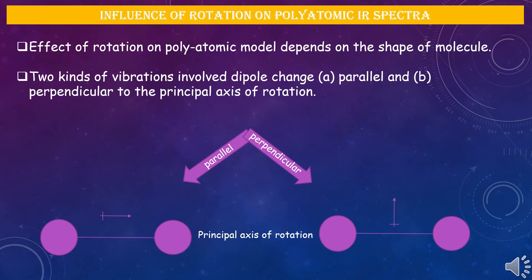Apart from these factors, the influence of rotation on the spectra of polyatomic molecules is also observed. For diatomic molecules, the selection rules are Δv = ±1, ±2, ±3 etc. and ΔJ = ±1. Vibrations of complex molecules can be subdivided into parallel and perpendicular to the major axis of rotational symmetry, so the molecular shape plays an important role in determining the effect of rotation on the spectra.